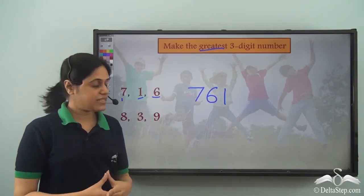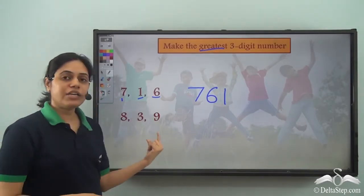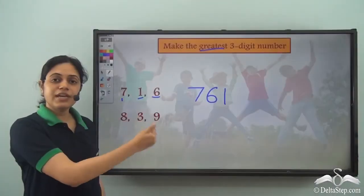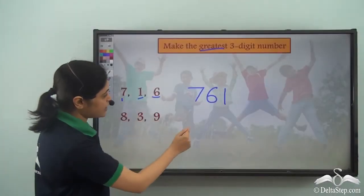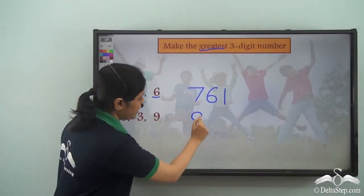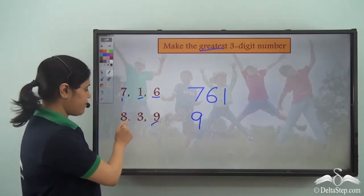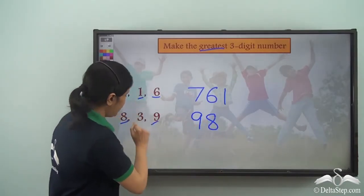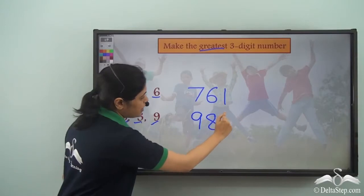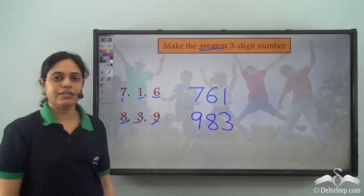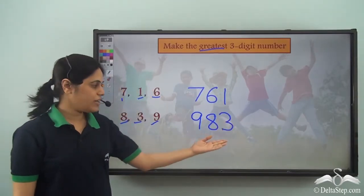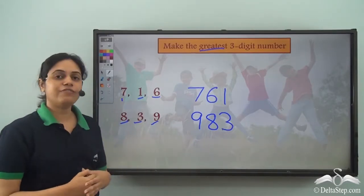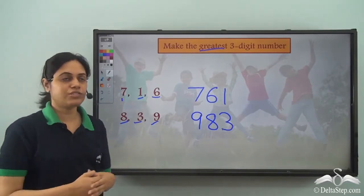Now try and frame the largest three-digit number using digits 8, 3, and 9. Arrange them in descending order. The highest is 9, then 8, then 3. So 983 is the largest three-digit number you can frame using these digits.